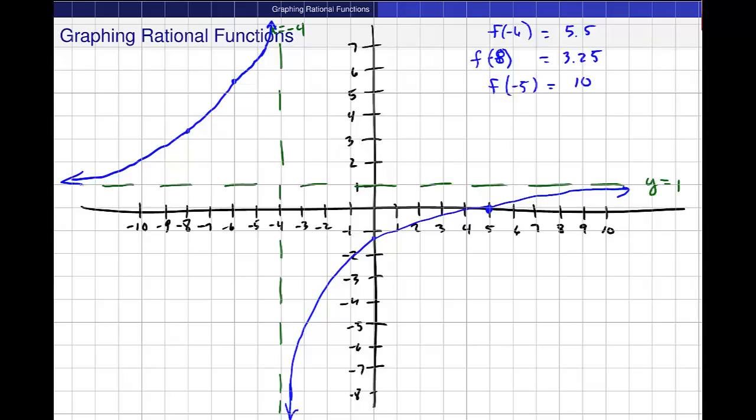So just from this information that we got, we draw a pretty accurate graph. If you want to compare with the graph that you get on your calculator, this will be pretty good. And you also have a very good idea of what's actually going on in this problem. Okay? So let me know if you have questions about graphing rational functions. We'll do some more practice.